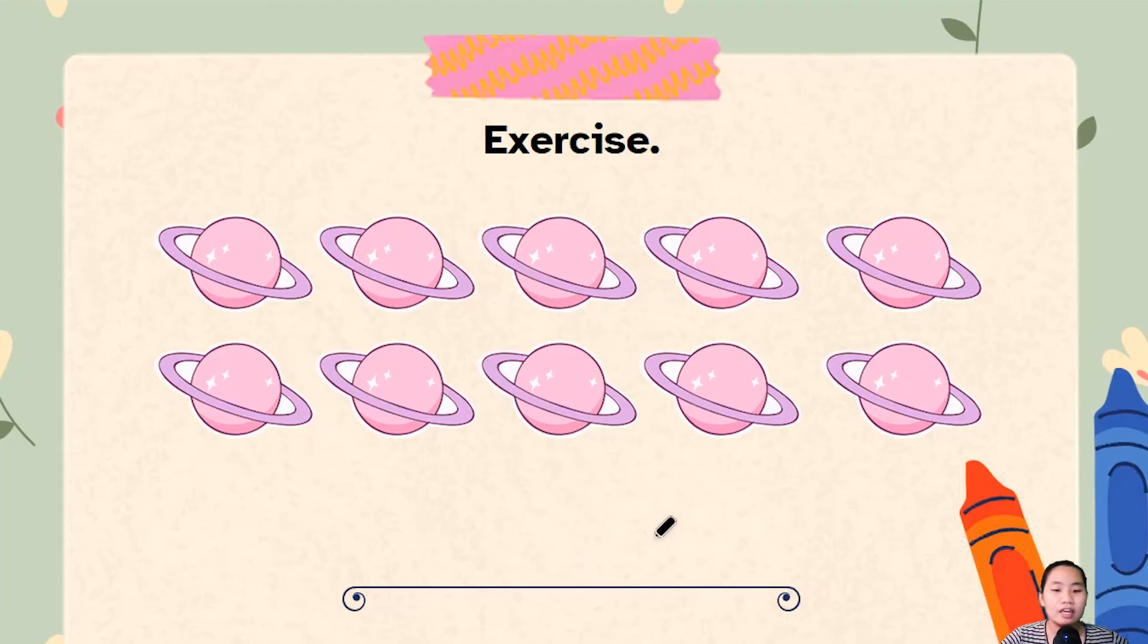I have a bunch of planets over here. Can you take a count of how many planets I have right now? One, two, three, four, five, six, seven, eight, nine, and ten. I have ten planets in total.